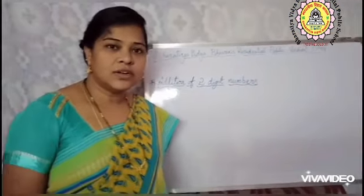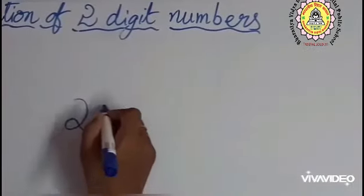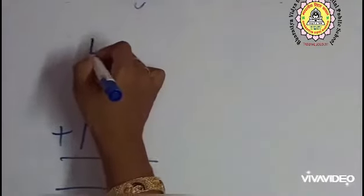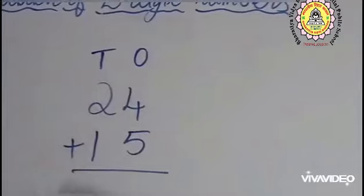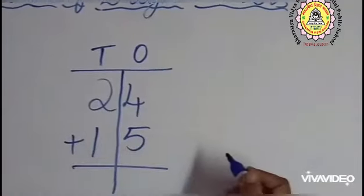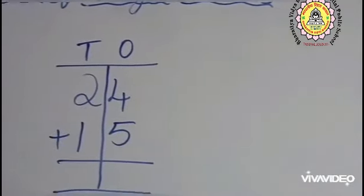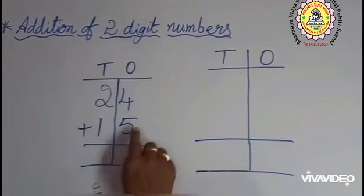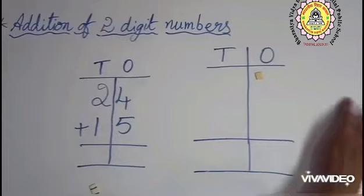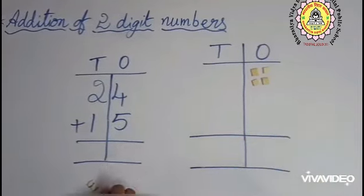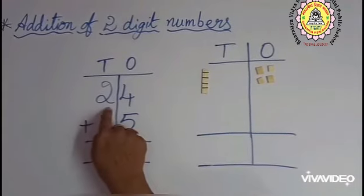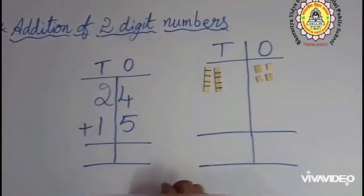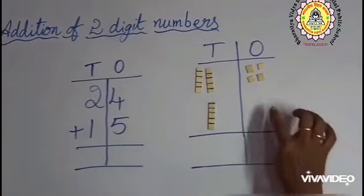Now let us learn addition of two-digit numbers. Let us add 24 plus 15. Here, 2 is in 10's place and 4 is in 1's place. Whenever we are going to start addition, we should add first from 1's place. Now, we shall add with the help of blocks children. In 1's place there is 4 — keep here 4. And each line equals to 10 children. In 10's place there is 2, that means 2 lines. And here in 10's place there is 1, and this side 5 ones.